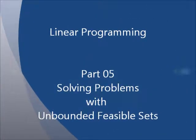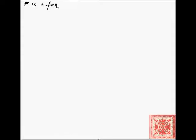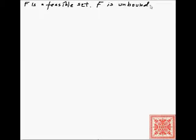Let's continue with our series on linear programming. This is Part 5: solving problems with unbounded feasible sets. This is where we stopped in Part 4 of this miniseries. We have a set F which is a feasible set, and F is also unbounded. In this screencast we'll discuss several techniques on how to handle unbounded feasible sets.